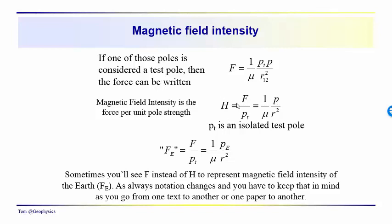So this magnetic field intensity is more or less the equivalent, in a sense, of the acceleration due to gravity, when we were talking about gravity methods.